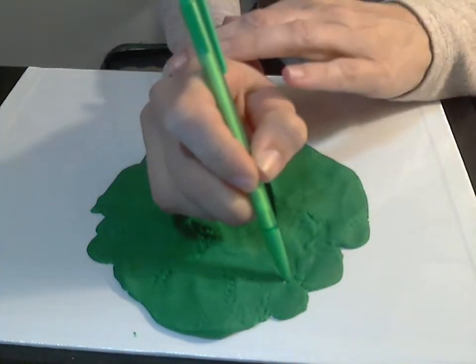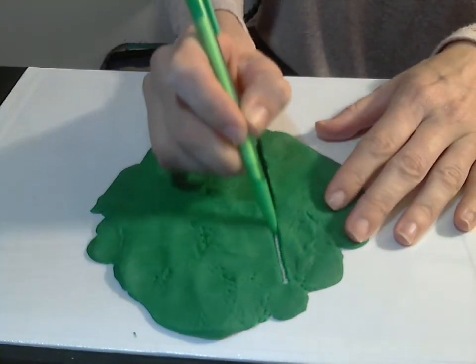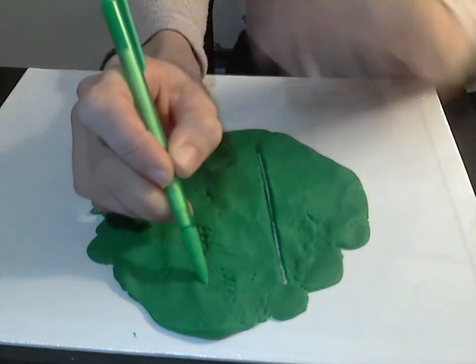So if they need hand-over-hand to start at the top, that's fine. Get them to trace, and then of course, try on their own.